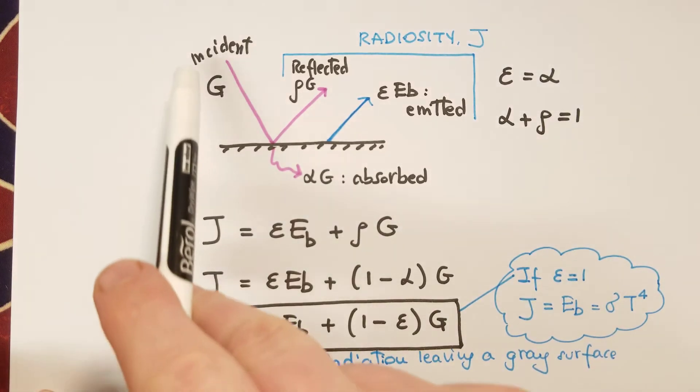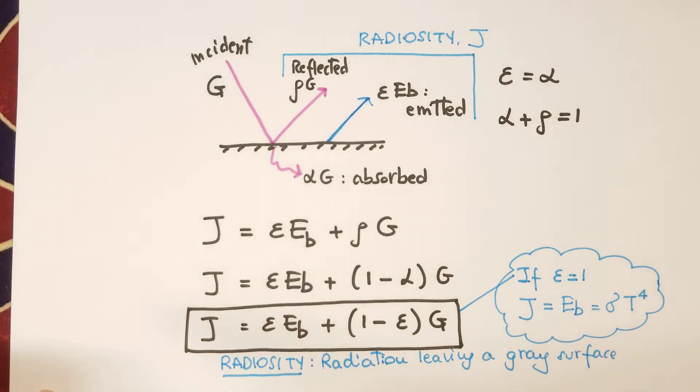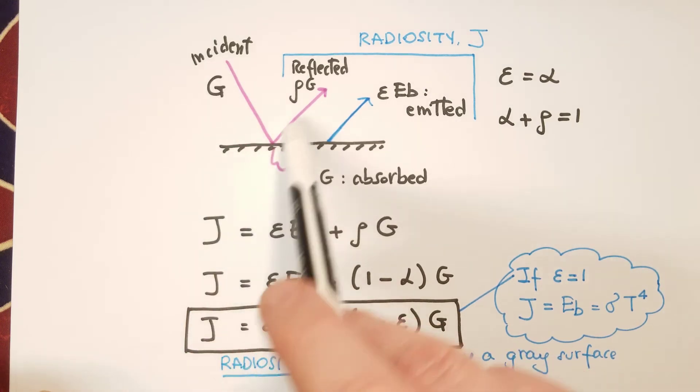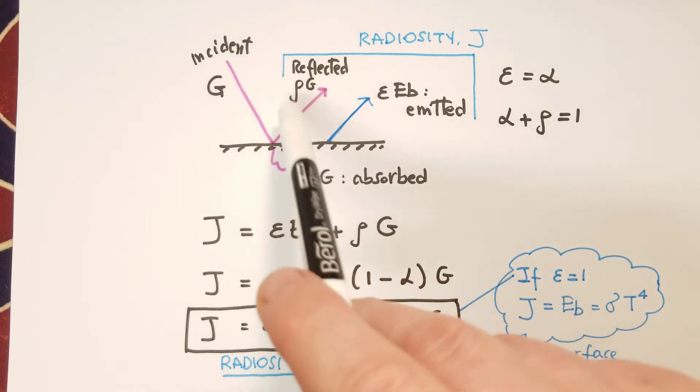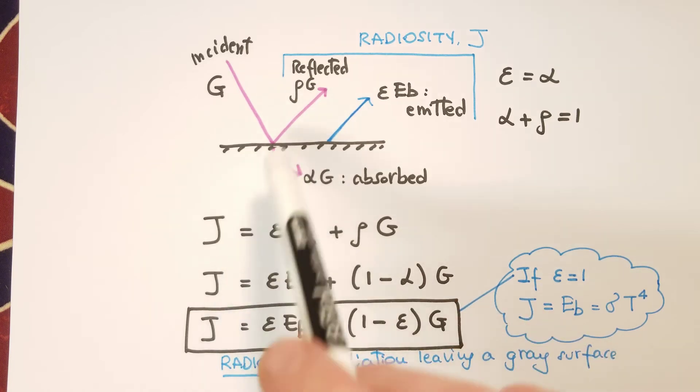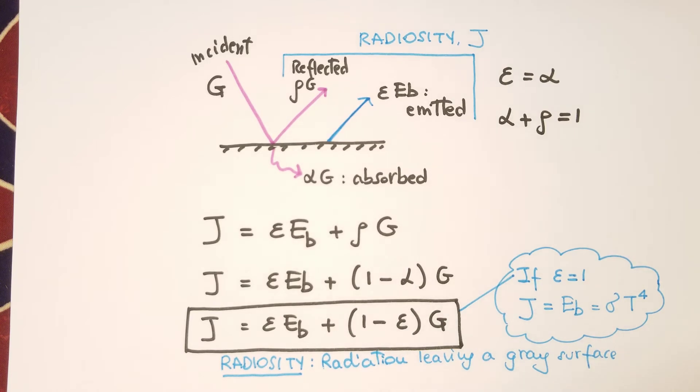So G is the incident radiation from the environment, from other surfaces. Part of this energy is reflected back to the environment, so that's ρG, where ρ is the reflectivity. So it's a non-dimensional number smaller than 1, and part of it, αG, is absorbed into the surface. And α is the absorptivity. And then we also have εEb, that's the emitted power by the surface itself. And the sum between the reflected amount of energy, ρG, plus εEb, the emitted power, is called radiosity.